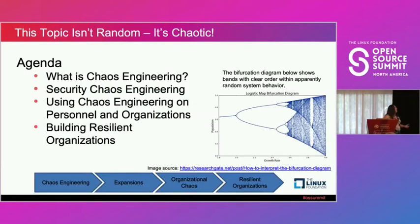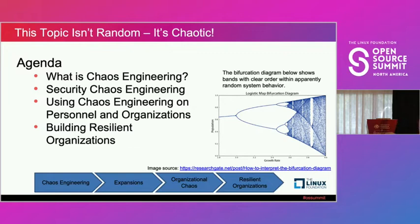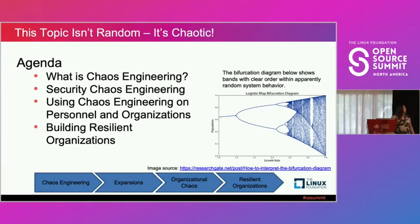This topic isn't random. You can see the bifurcation diagram on the chart, which illustrates the idea that even in a chaotic system there are periods of order, and there is a lot you can ascertain from the system by doing deliberate tests on it. Today I'm going to talk about what chaos engineering is in general.